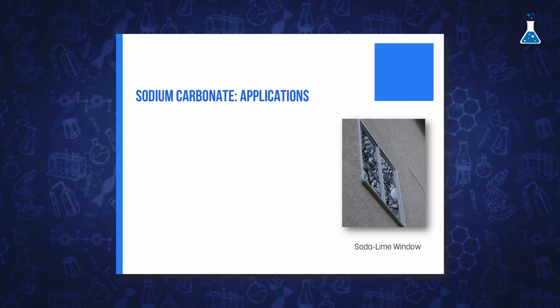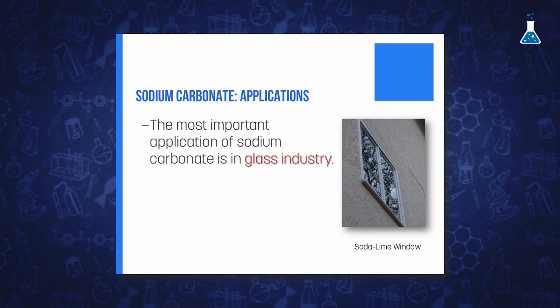Regarding the applications of sodium carbonate, one of the most important is in the glass industry. The process of making glass consists of melting together at 1500 degrees Celsius sodium carbonate, limestone, and sand to produce molten glass. Recycled glass can also be added to the mixture.